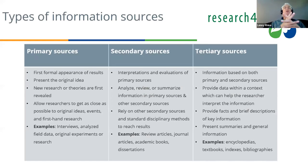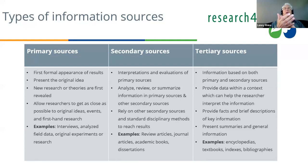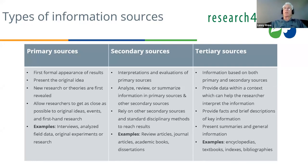Tertiary sources are based on both primary and secondary sources and provide data within a context to help interpret information and give background. Examples are encyclopedias, textbooks, indexes, and bibliographies. As an example: a journal article with data tables is a primary source — it gives you data you can interpret and analyze. A review article, such as 'Recent Advances in Understanding Dengue — A Selective Review of Recent Publications,' is a secondary source summarizing current research, very valuable at the beginning of a literature search.